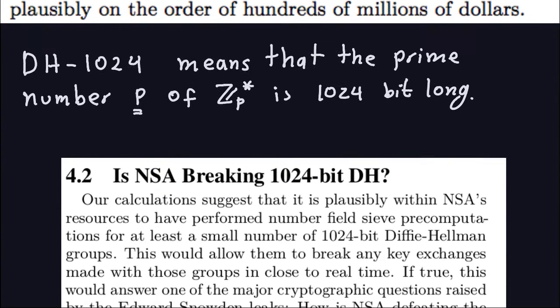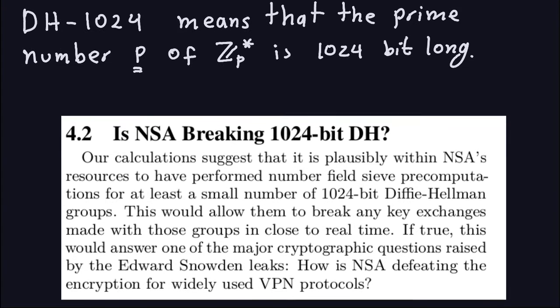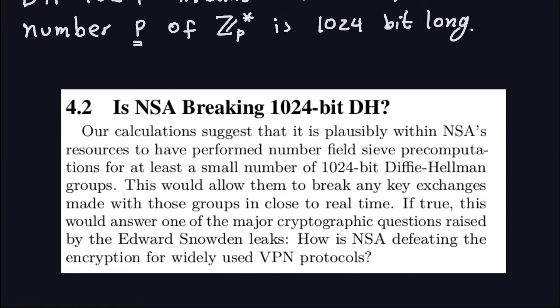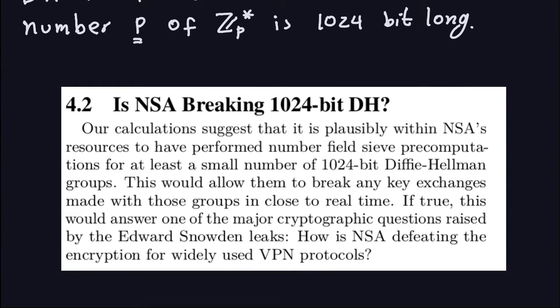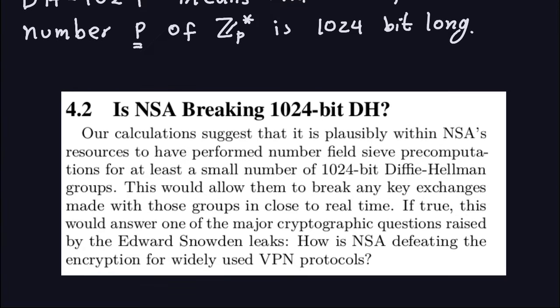Another thing I want to mention to finish this video: that article also has a section 4.2 titled "Is the NSA Breaking the 1024-Bit Diffie-Hellman Key Exchange?" As mentioned earlier, breaking the Diffie-Hellman key exchange costs money — around 100 million dollars. You can read what it says there directly.